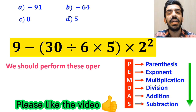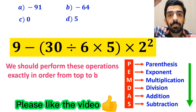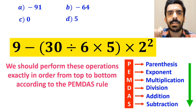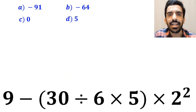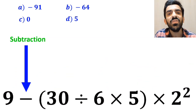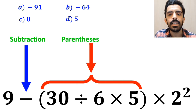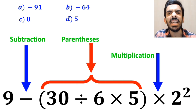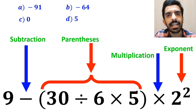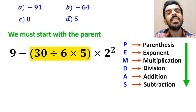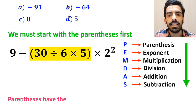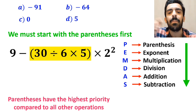We should perform these operations exactly in order from top to bottom according to the PEMDAS rule. As you can see in the image, in this expression, first we have a subtraction sign, then parenthesis, after that a multiplication sign, and finally exponent. So we must start with the parenthesis first, because parenthesis have the highest priority compared to all other operations.